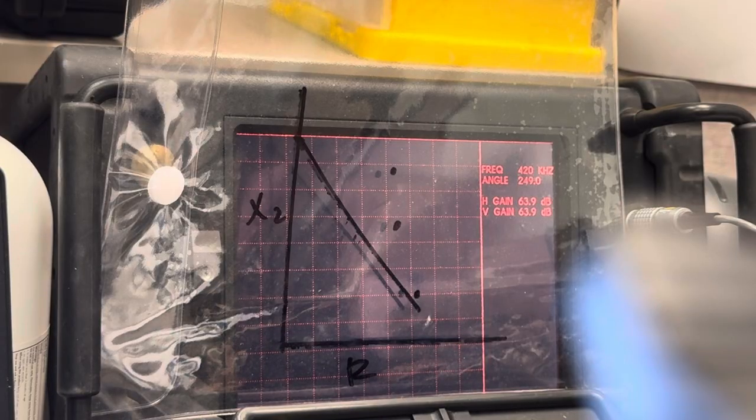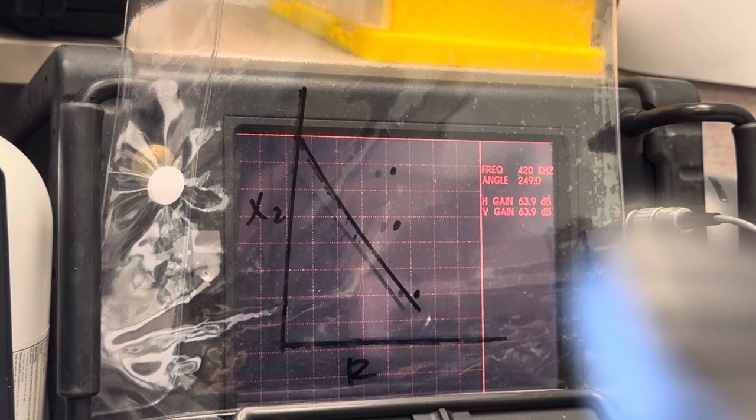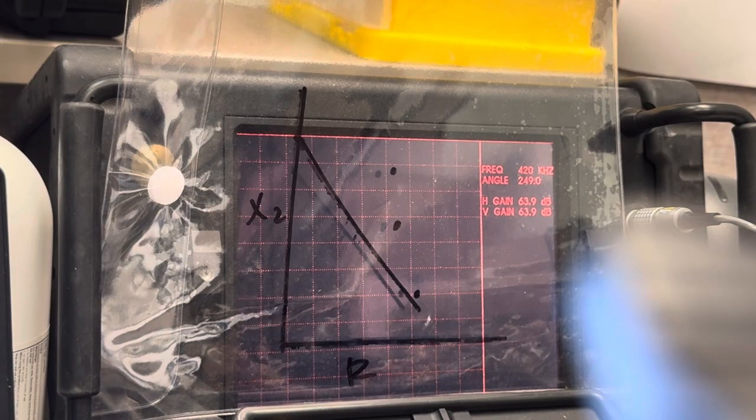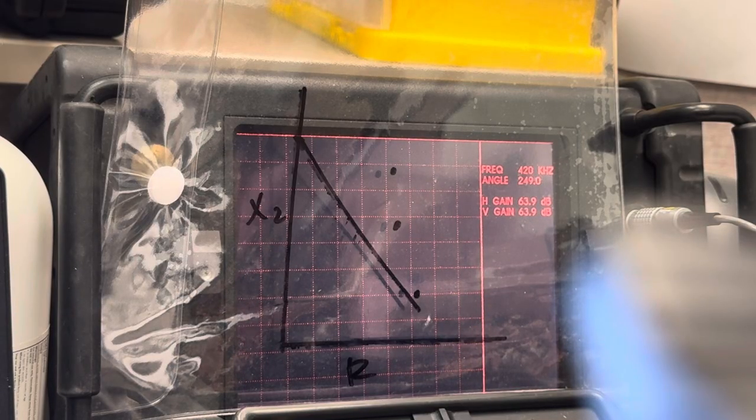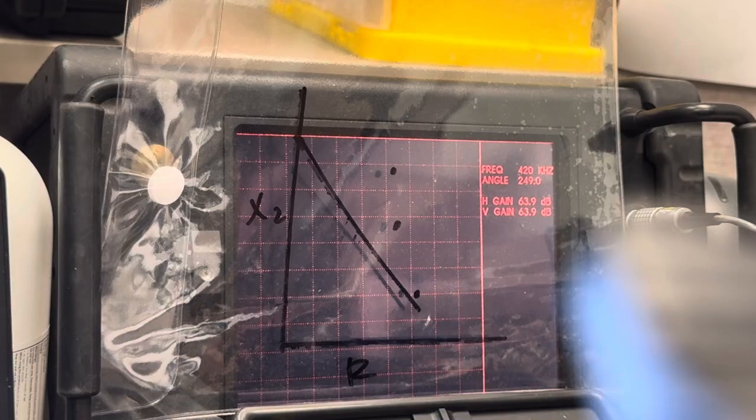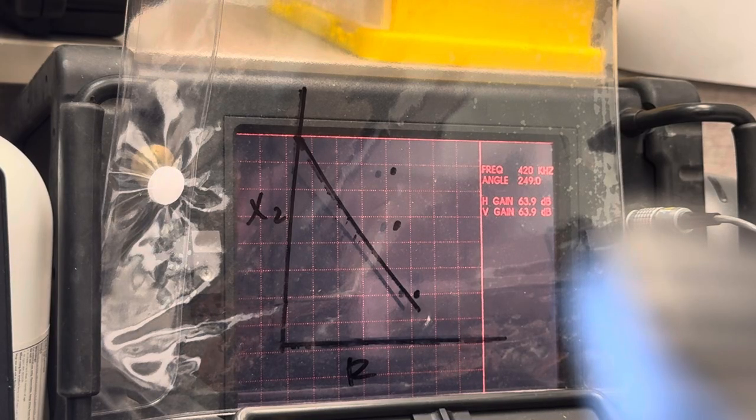So nowadays, when we look at signals, if somebody takes a graphic of an eddy current signal and shows it to you, they're not showing you an impedance point. They're showing you the path that the impedance point took as it traveled up to, over, and past the indication, then back to null, right? So you're seeing dozens, if not hundreds, of vector points all connect together, kind of like an Etch-a-Sketch, right?